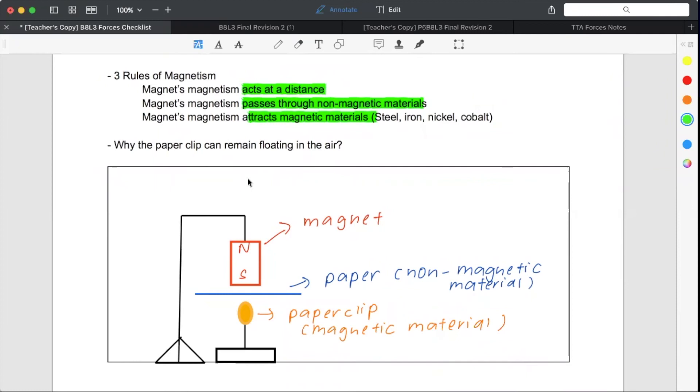So anyway, why the magnet clip can remain floating in the air? So this is a simple example. Your magnet, your paper clip, your paper clip definitely must be a magnetic material. In this case, you have your non-magnetic material. Because magnetism can pass through non-magnetic material, it applies the second rule. So this shows why the paper clip can float. It does satisfy all the three rules of magnetism. It acts at a distance. There's no need for contact. It's able to attract your paper clip. Your paper clip must be a magnetic material. Non-magnetic material, which is your paper.